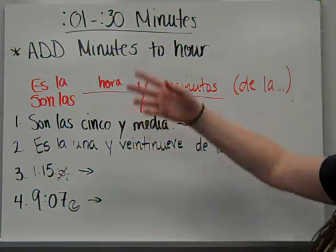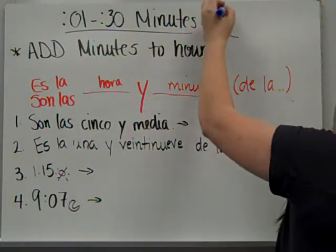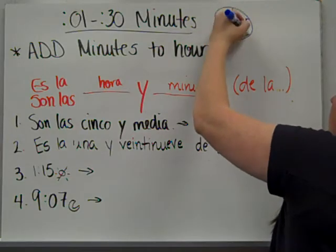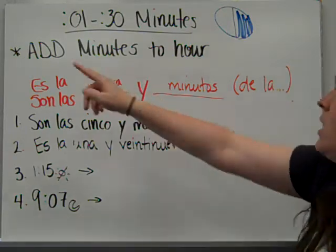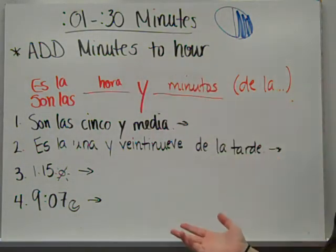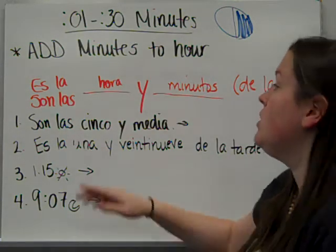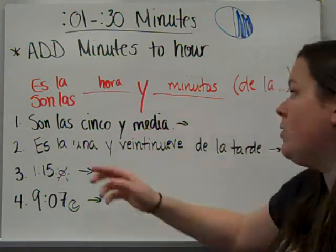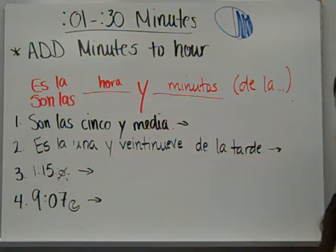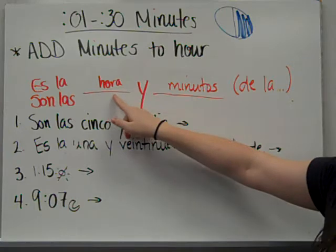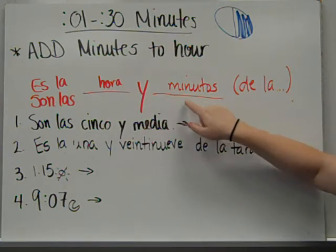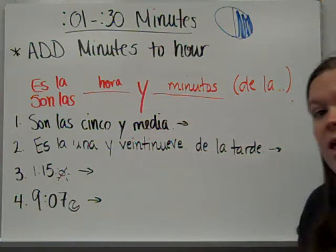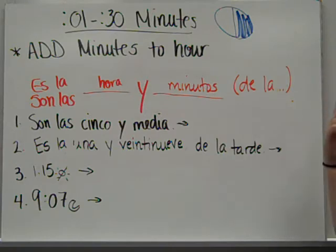There's two sets of ways to tell time. So we're going to start first with up to half past. So thirty minutes. We're on that side of the clock right now. Up to and including thirty minutes. You can add the minutes to the hour. Like we did in the previous examples. So here's your rule that I want you to obviously write down. You're going to start out with es la or son las. Then you tell me the hour or hours. So one, seven, twelve, whatever. Y and how many minutes. Minutos. And then if I give you this information, add de la mañana tarde noche. Whatever it would be. And then you're done.